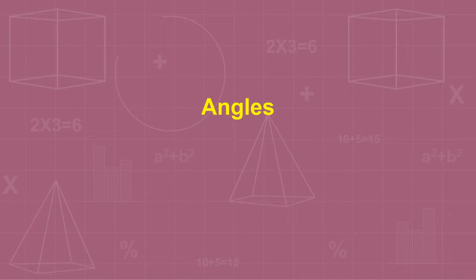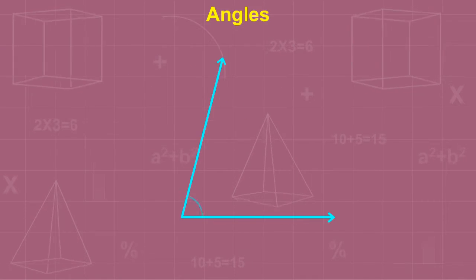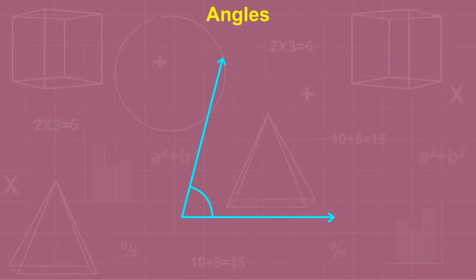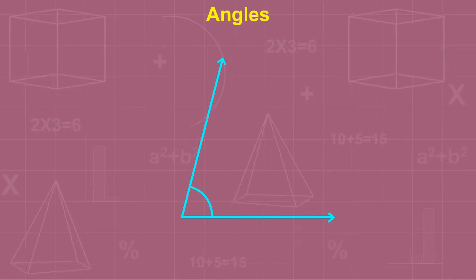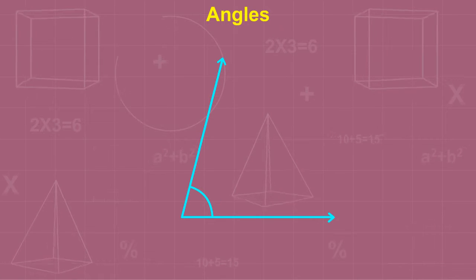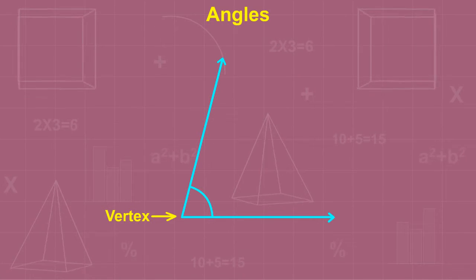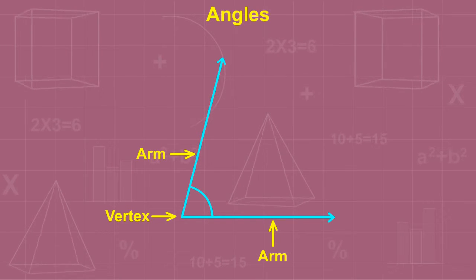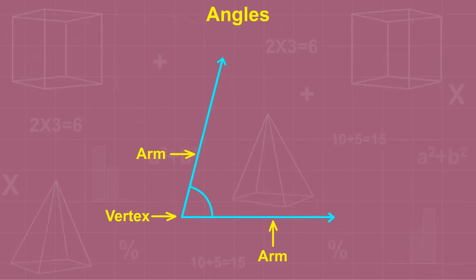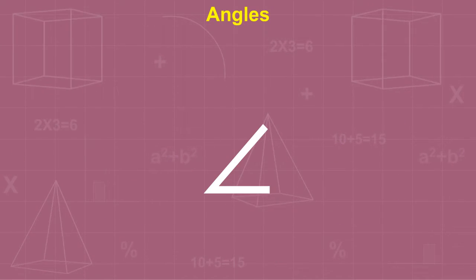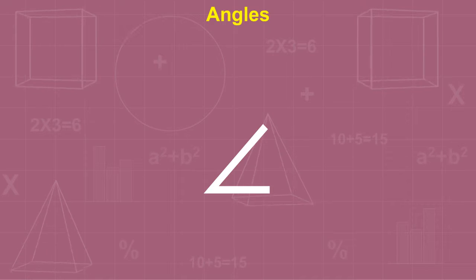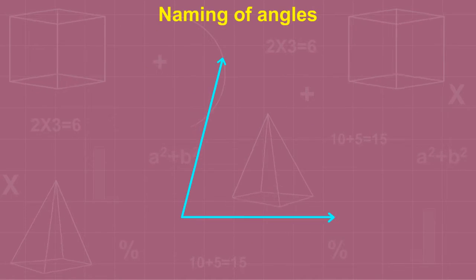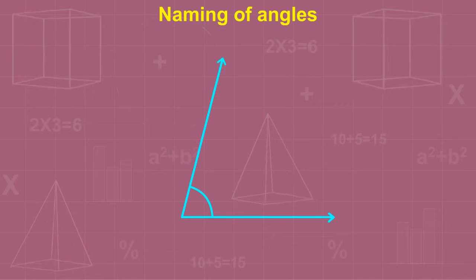An angle is made up of rays that have the same endpoint. The endpoint at which two rays meet is called the vertex of the angle, and the rays forming the angle are called its arms or sides. It is represented by the symbol for angle.